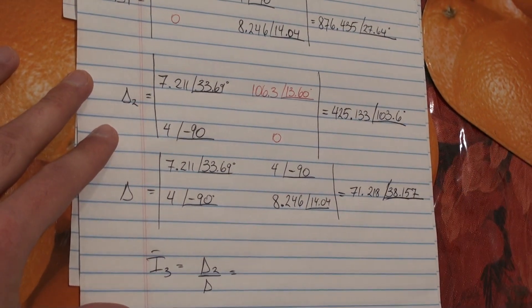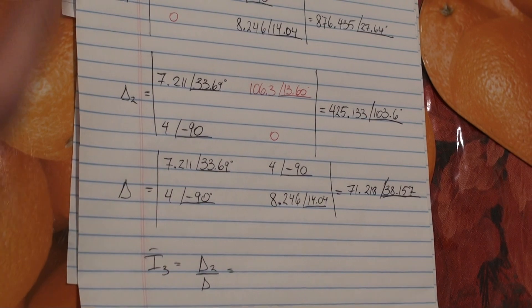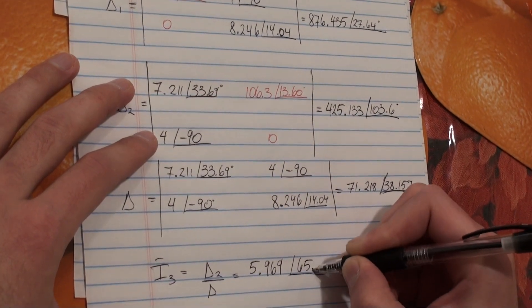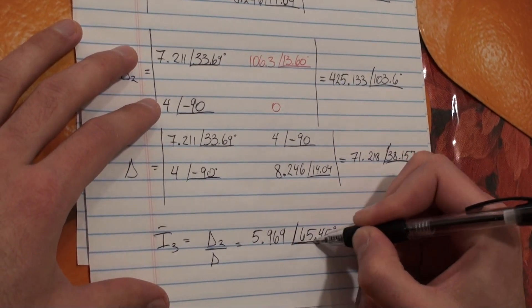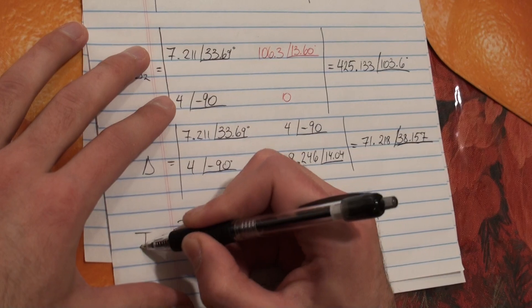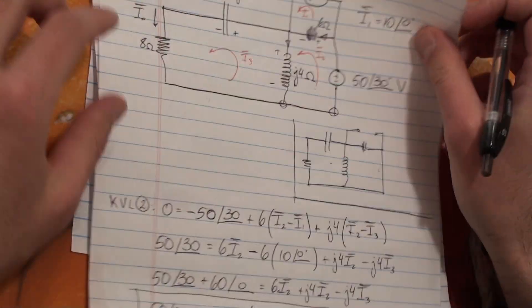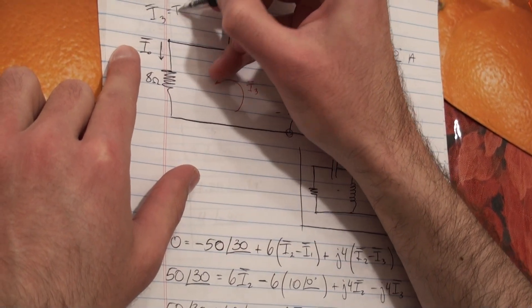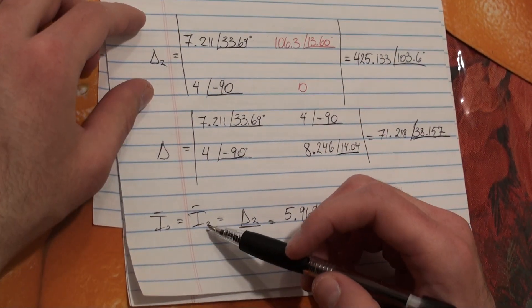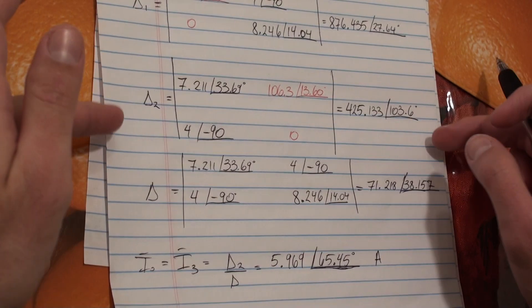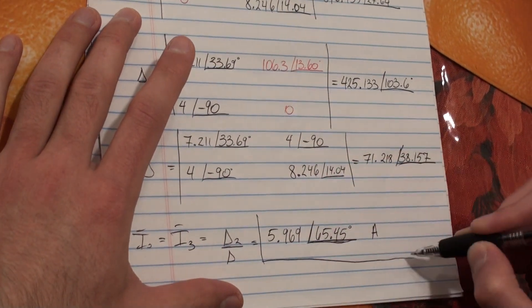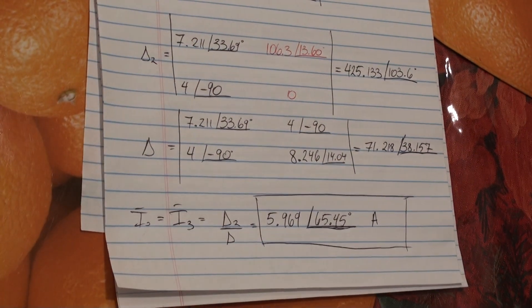So it's this over this. And if you were to do that, you would get 5.969 at an angle of 65.45 degrees. This is amps. And this is equal to I0, because we see from our original circuit, I3 is simply I0. So there's no need to go through all the steps to find I2. You just need to find I3, which is I0. I just put this here just for practice to recall how to do Kramer's rule. And that concludes the problem. This is our solution in phasor form for the current I0.